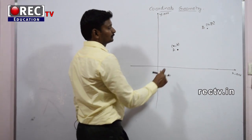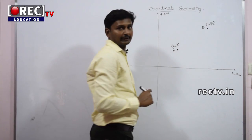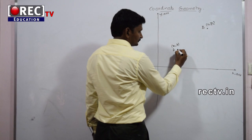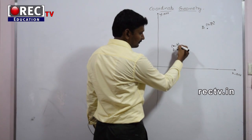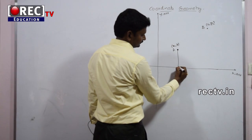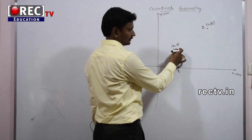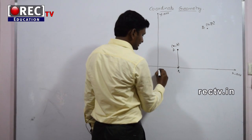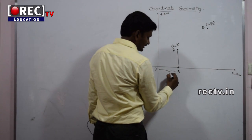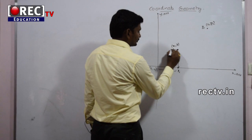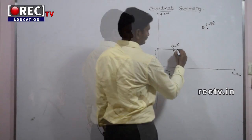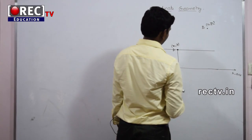Consider two points A(X1, Y1) and B(X2, Y2). We are finding the distance between those two points. For point A(X1, Y1), the perpendicular from the X axis gives the value X1, and the distance from the Y axis gives Y1. For point B(X2, Y2), the first value X2 is represented on the X axis, and the second value is Y2.